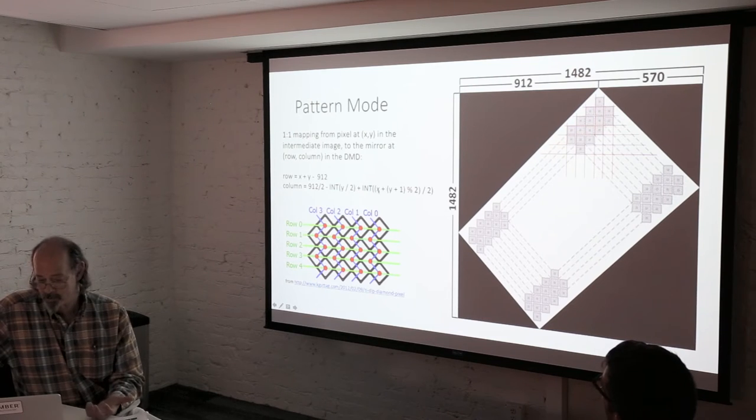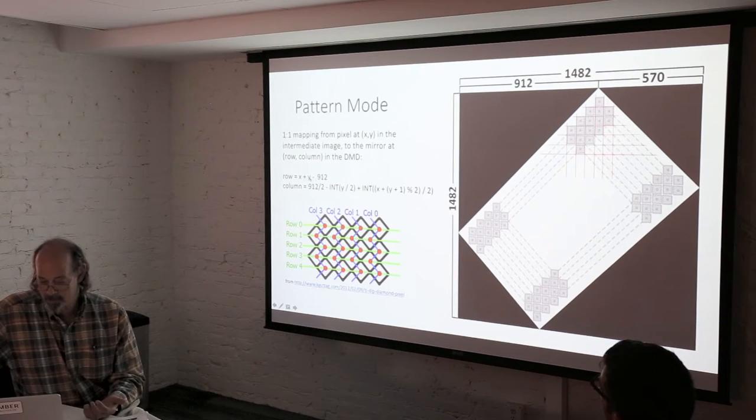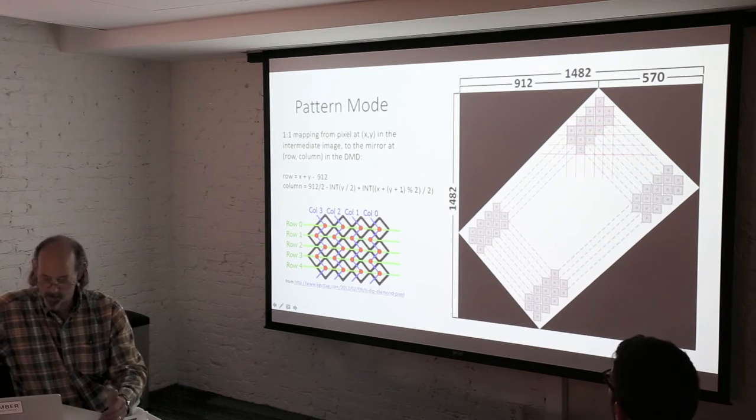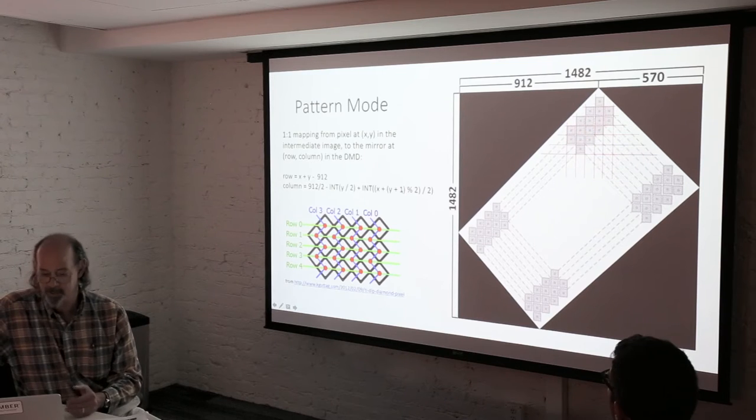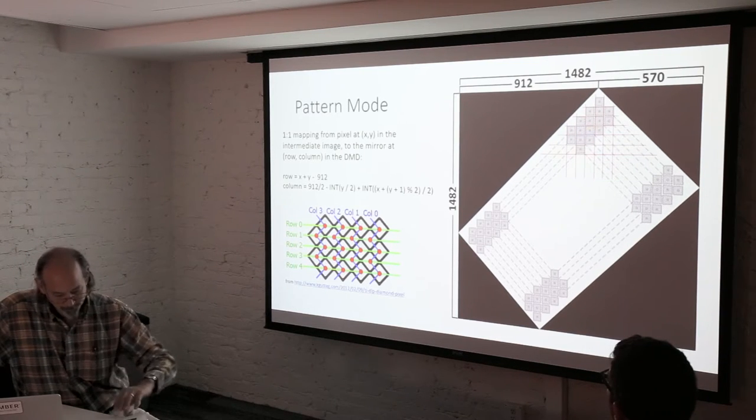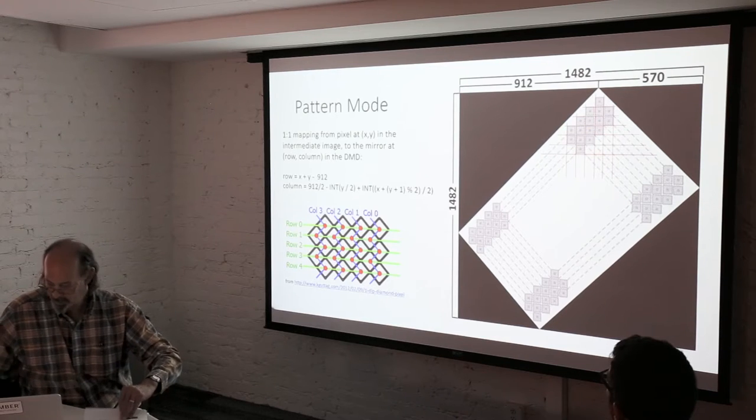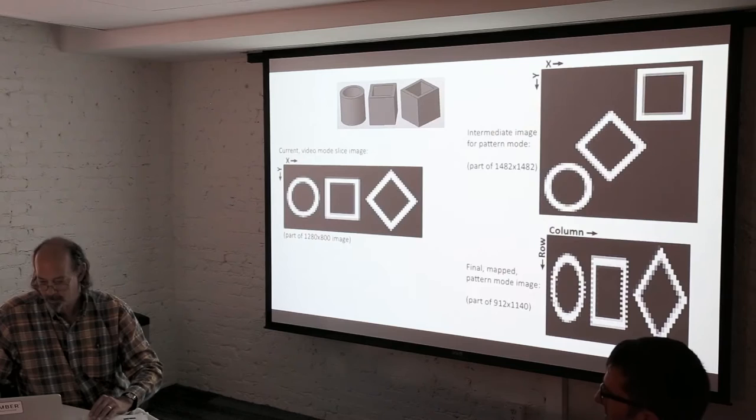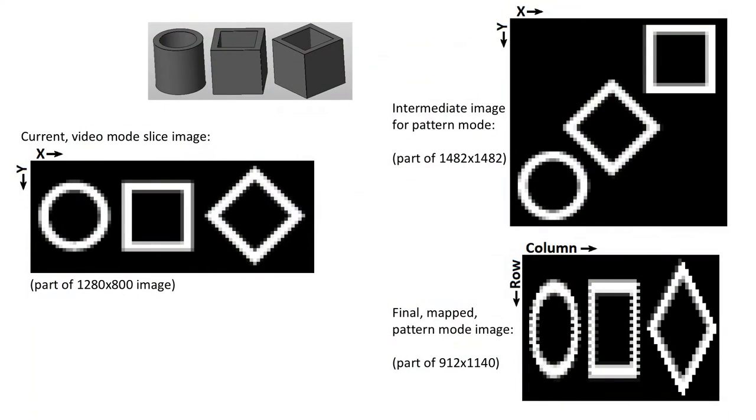This is another picture from the Carl Guttag article. So we have to use this weird function to map from x and y position to row and column. But it's actually a very simple function. And you'll notice all we have on this side of the equation are x and y. We're not looking at neighboring values, x minus 1, x plus 1, or y minus 1, y plus 1. There's no filtering going on. Simple one-to-one map. And users aren't going to have to worry about any of this, because we'll take care of that mapping in firmware.